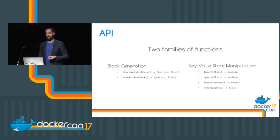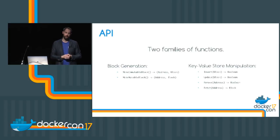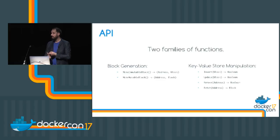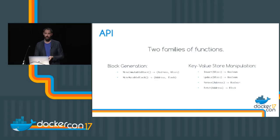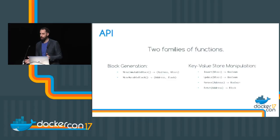Now that you understand the different types of blocks, the API is composed of two families of functions. You can generate blocks using make_immutable_block or make_mutable_block — those calls return both an address (the generated key) and the block itself with your data. Once you have a block, you can insert it, update it if it is mutable, remove it, and fetch it. Pretty straightforward — all the intelligence really lies in the different types of blocks.